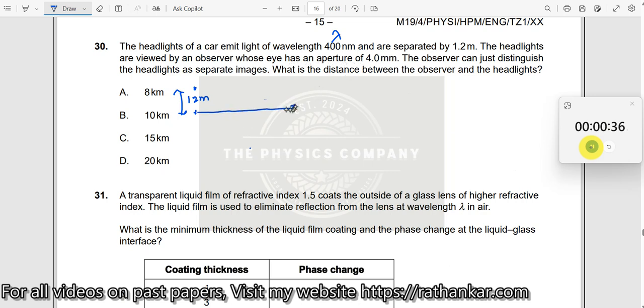Somewhere over here, there is an observer. So, let me put this line over here. So, therefore, let this angle made by him be theta. And the aperture has, eye's aperture has 4 mm over here as his diameter. The observer can distinguish the lights as separate images. What is the distance between the observer and the headlights?